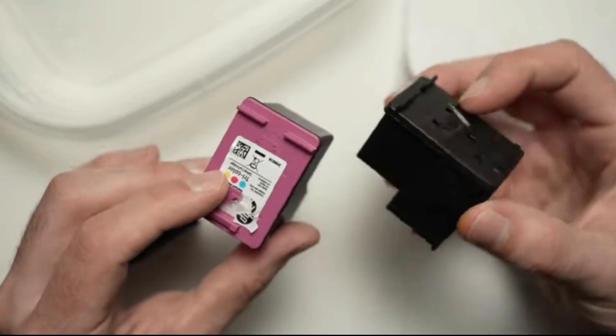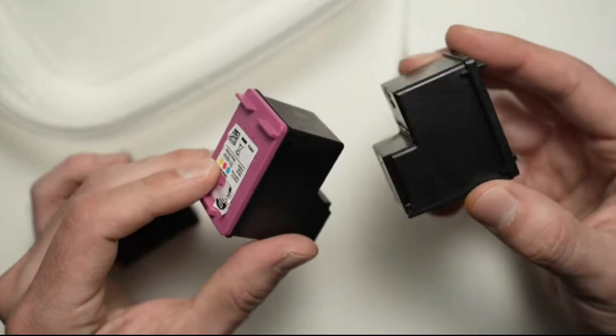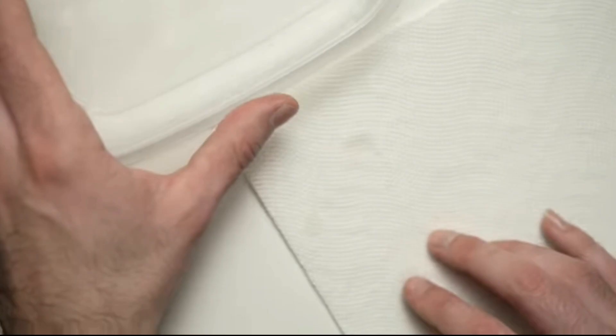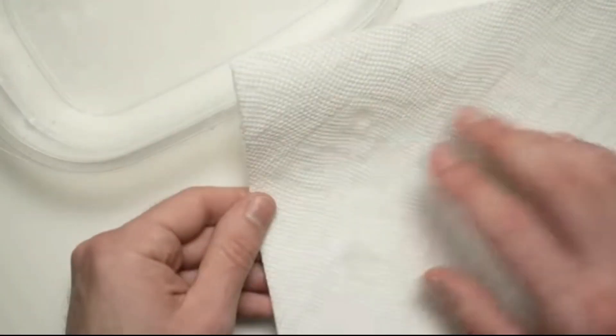After you manually clean the ink cartridges, the printer performs an automatic cleaning cycle to eliminate remaining debris. There are eight steps to do this.